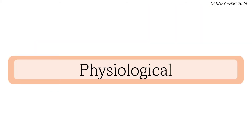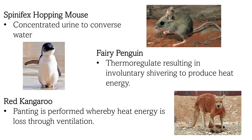Physiological adaptations refer to the metabolic or physiological adjustment within the cell or tissues of an organism in response to an external stimulus. The Spinifex hopping mouse has evolved a unique feature to conserve water so that it can continue to thrive in Australia's harsh desert climates. This species is said to have the most efficient tiny kidneys, which allow it to produce the most concentrated urine of any mammal ever recorded.